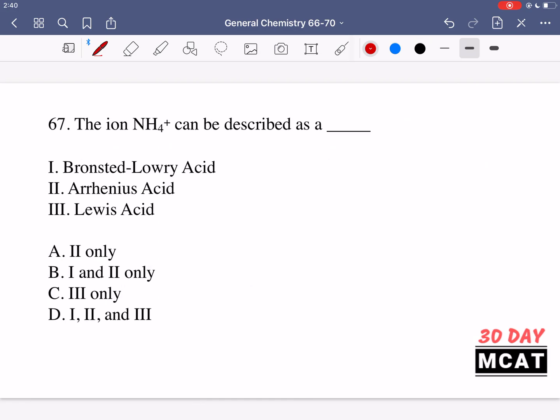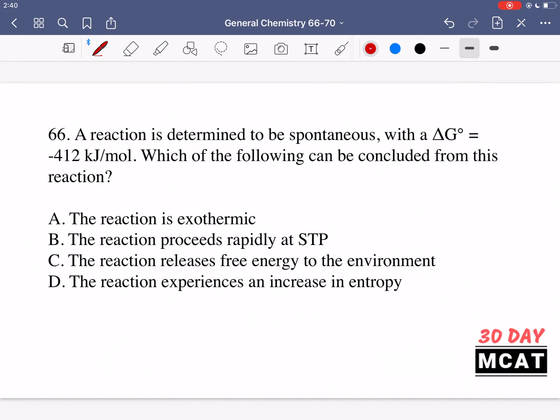Now let's go through the questions together. In question 66, it says a reaction is determined to be spontaneous with a delta G° of negative 412 kilojoules per mole. Which of the following can be concluded from this reaction?